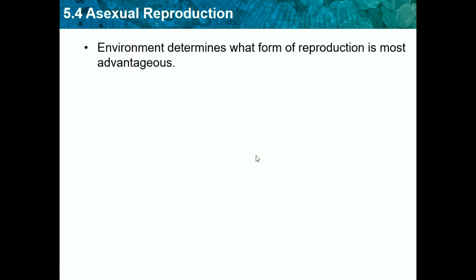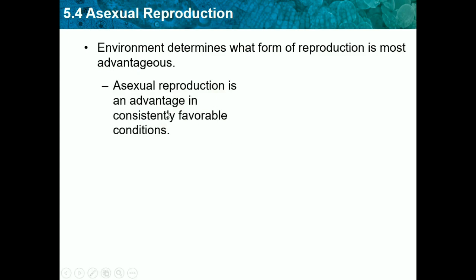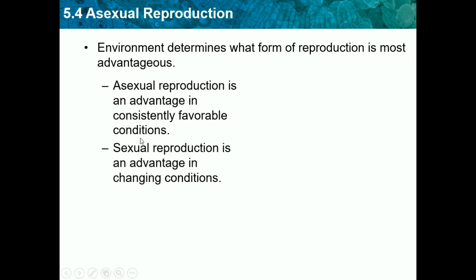The environment determines what form of reproduction is most advantageous. Asexual reproduction is advantageous in consistently favorable conditions, meaning your environment is always favorable. Sexual reproduction is an advantage in changing conditions — changing environments, changing temperature, changing habitats. Most of our world changes, so sexual reproduction is probably better for most organisms because conditions are usually changing.